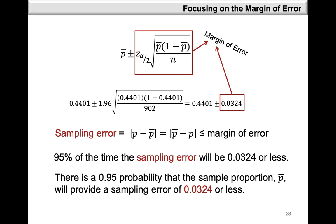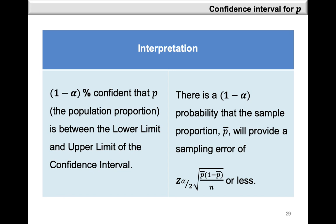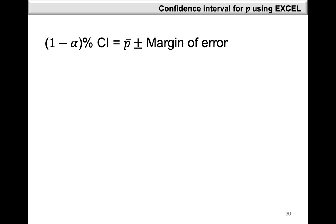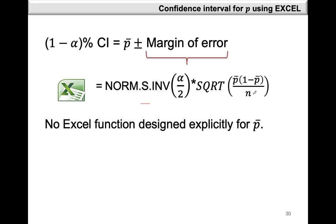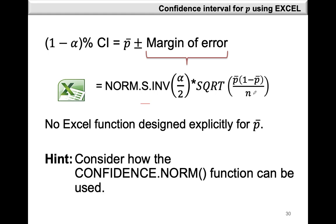The interpretation of the confidence interval for the population proportion P remains exactly the same as explained in the first two videos, only now we are interested in the population proportion and not the population mean. We can also use Excel's built-in functions to calculate the margin of error: NORM.S.INV with alpha over 2 in brackets gives the Z alpha over 2 value, which we multiply by the square root of P-bar times 1 minus P-bar divided by n. You may also consider using the CONFIDENCE.NORM function as explained in the first video and compare your result with this formula.